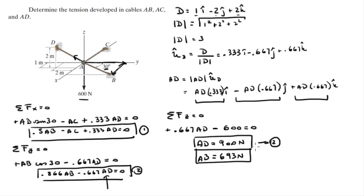And you plug these two into equation one and you solve for AC, and you get that AC is equal to 646.5 newtons. Final answer for AD, final answer for AB, and final answer for AC.